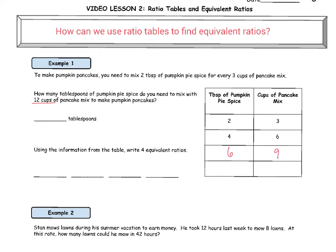It continues one more time — if we were to add two more tablespoons of pumpkin pie spice, we'd have to add yet another three cups of pancake mix. The question asks us how many tablespoons of pumpkin pie spice do we need if we were to have 12 cups of pancake mix? Well, we need eight tablespoons of pumpkin pie spice. So that's our answer for the first one.